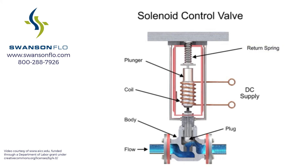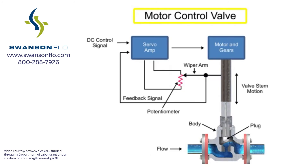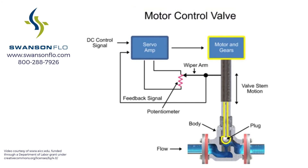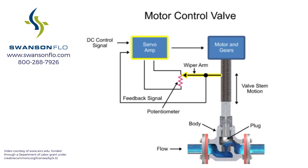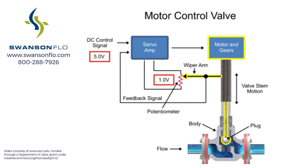Another method for variable valve positioning uses a motor and is referred to as proportional control mode. Using a gear motor attached to the valve stem, a servo amplifier provides a DC control signal that moves the valve to the desired position. Feedback is achieved with a wiper arm attached to the valve stem that sends a signal back to the servo amplifier where the position is monitored. The servo amplifier drives the motor until the control signal is equal to the feedback signal.